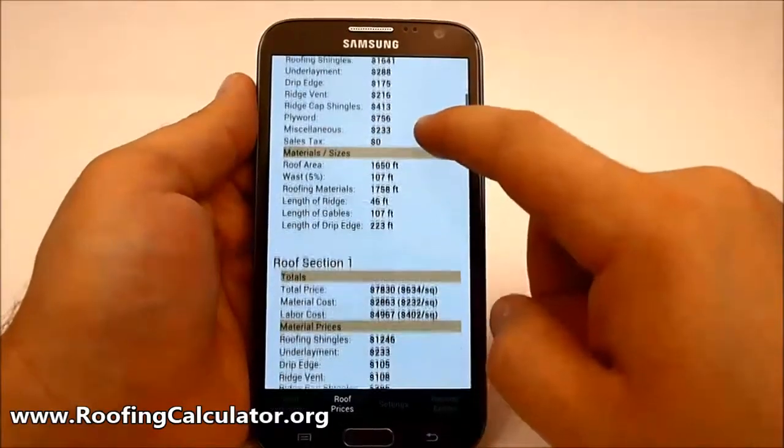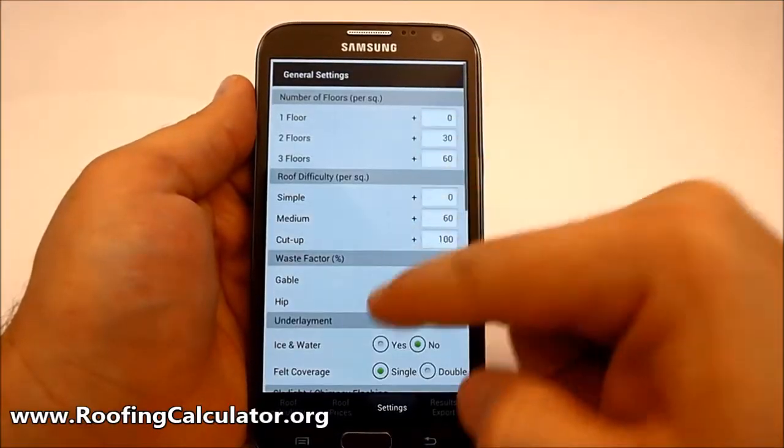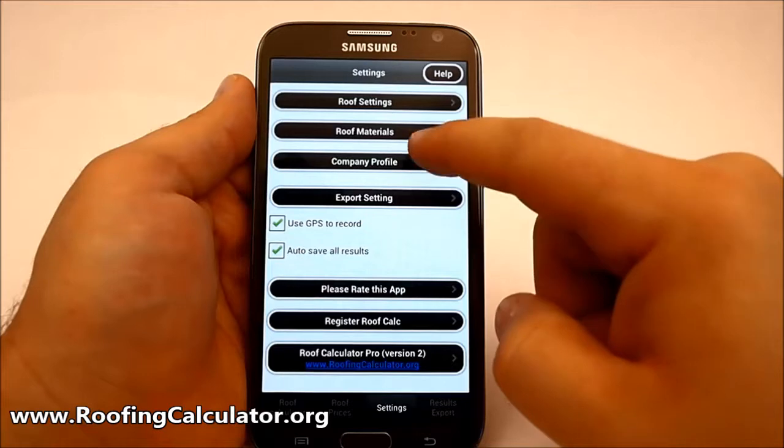Estimator has full access to edit cost of materials, labor, and miscellaneous items. You can also include roofing materials to customize and be job specific.